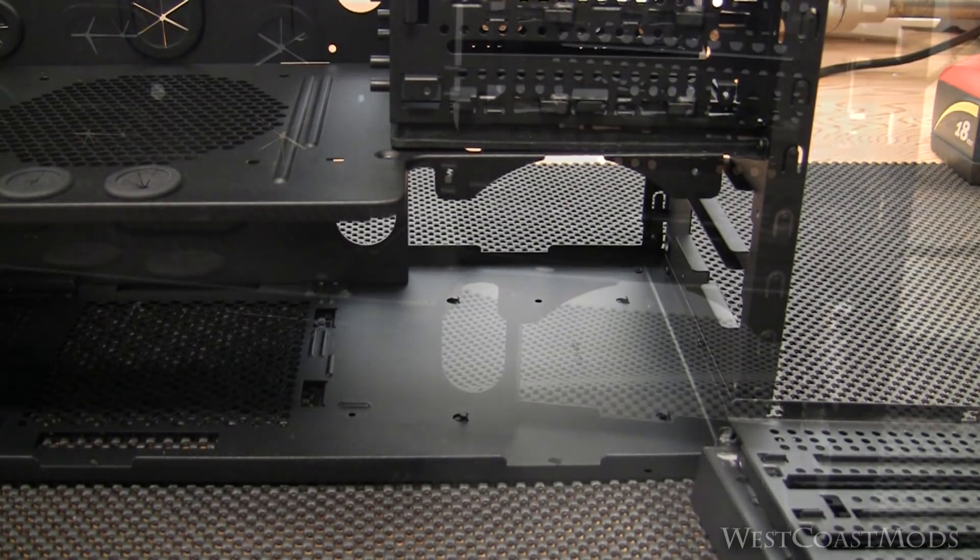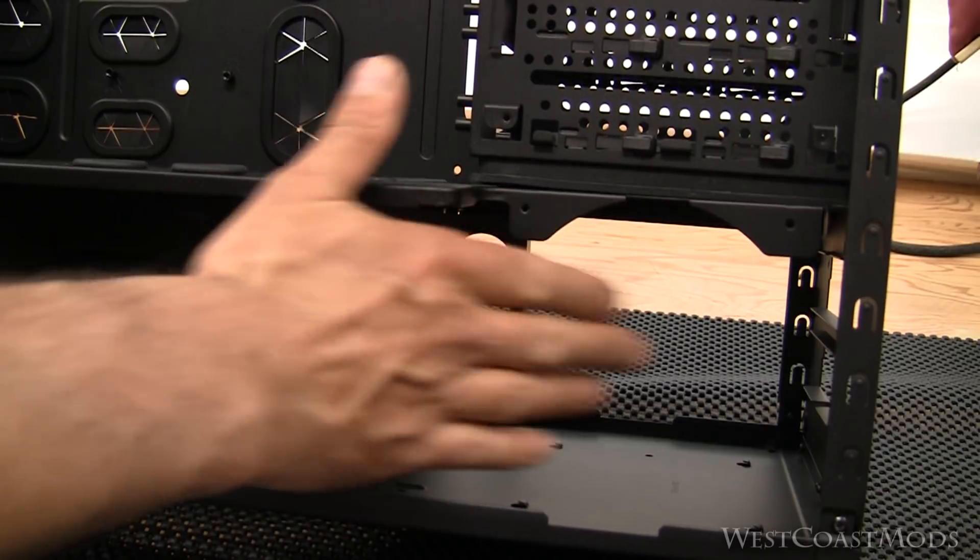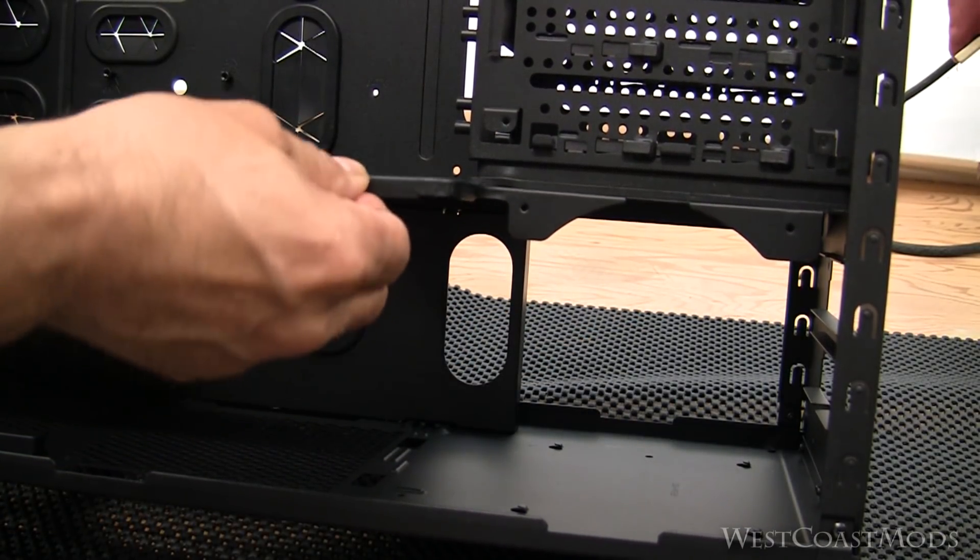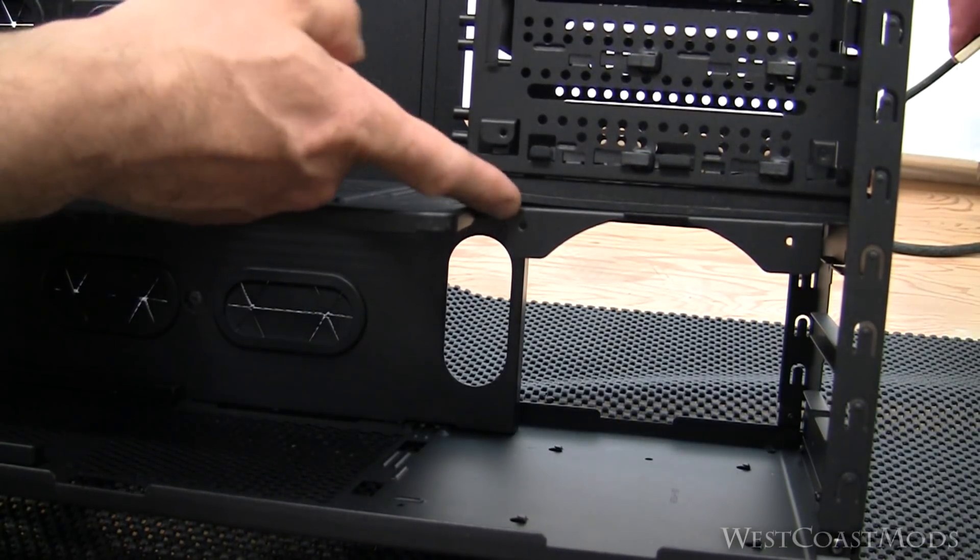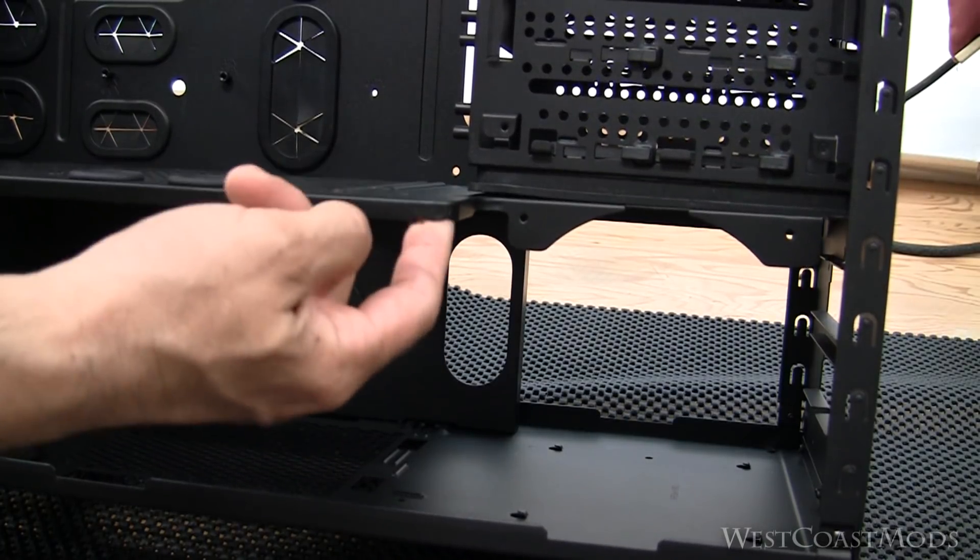One thing I wanted to point out is when you actually do remove the hard drive brackets, this will need to be re-supported. You can see it's starting to separate here from the hard drive cage above it, so we'll eventually make a bracket going from here down to the bottom to keep that reinforced.